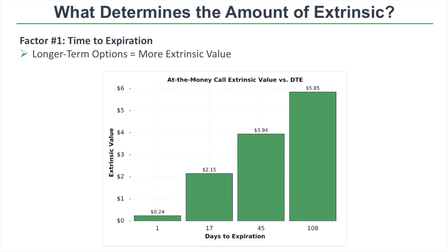Now let's talk about what determines the amount of extrinsic value in an option. Intrinsic value is easy to calculate, but extrinsic value is much less straightforward. There are two primary factors: the first is the amount of time until the option expires. Longer-term options are more expensive because there's more time for the stock price to make larger movements and for those options to become more valuable.